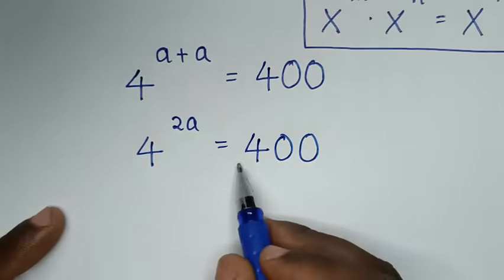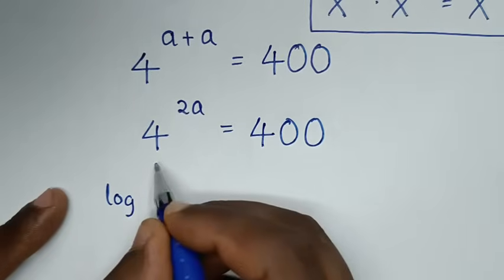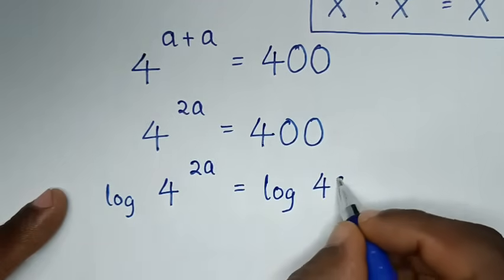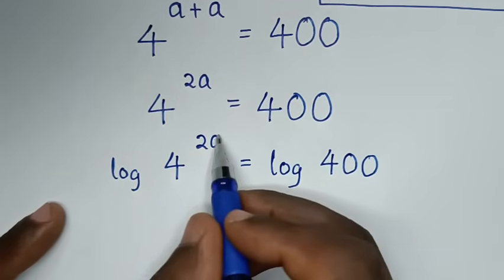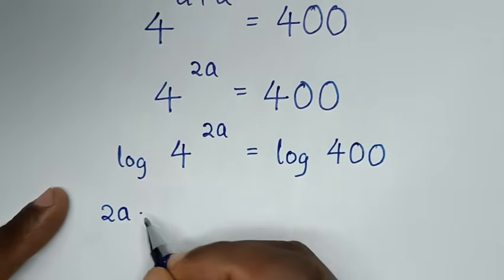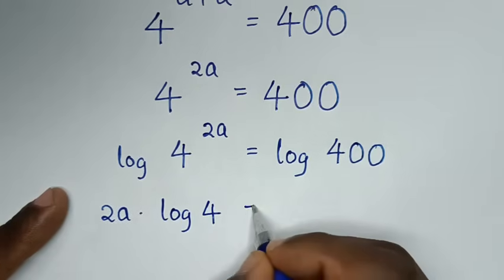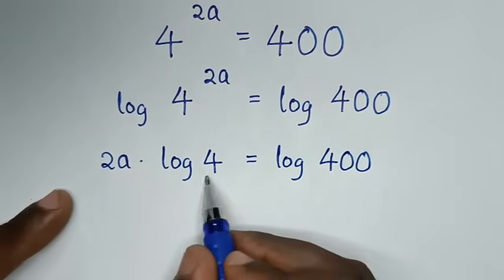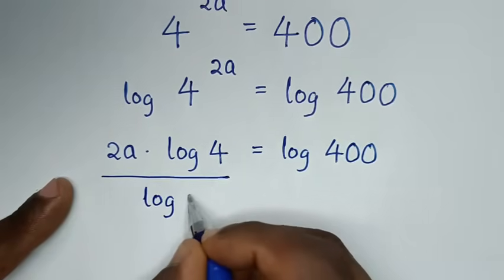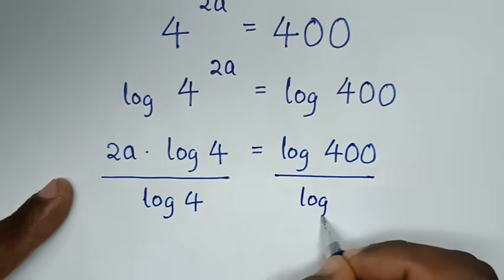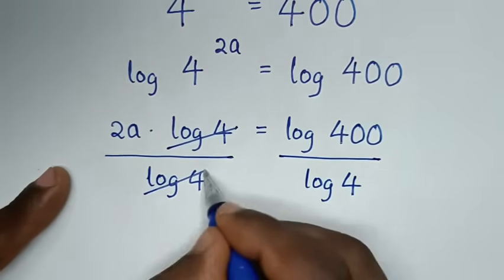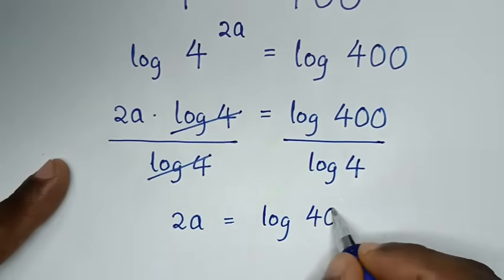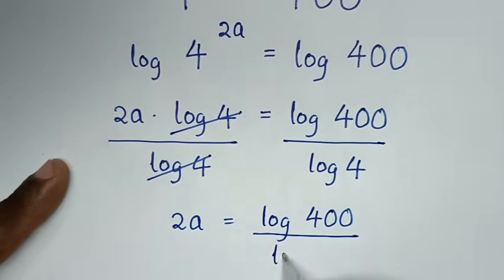Then, we will apply log on both sides. So it will be log of 4 power of 2a is equal to log of 400. Then, this power of 2a will move to the front, so it will be 2a times log of 4 is equal to log of 400. Then, we will divide by log of 4 on both sides, so it will be 2a is equal to log of 400 over log of 4.